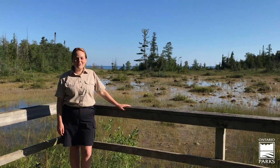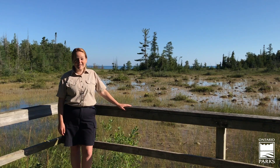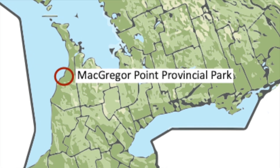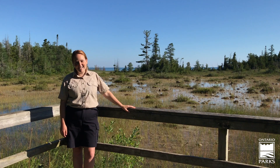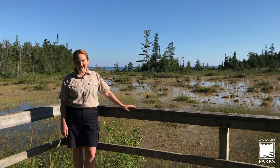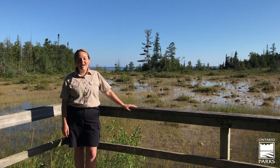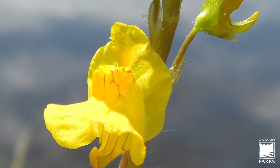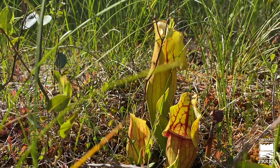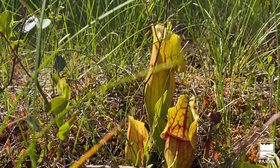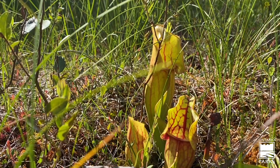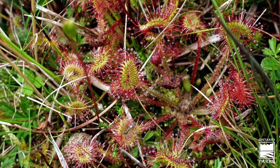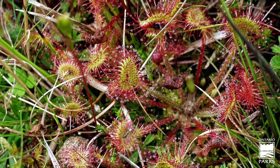Hi, I'm Kathleen from McGregor Point Provincial Park in the Discovery Program. Here at McGregor Point, we have a wonderful example of a fen wetland. This fen is such a cool habitat and it's known especially for having a large variety of carnivorous plants like bladderwort, pitcher plant, and sundew. So even as we're here chatting, the plants around me are busy eating insects like mosquitoes. We're really proud to protect this habitat because it's pretty rare in southern Ontario.